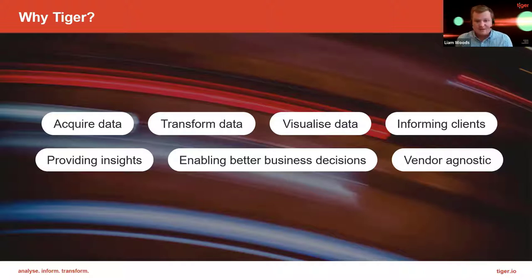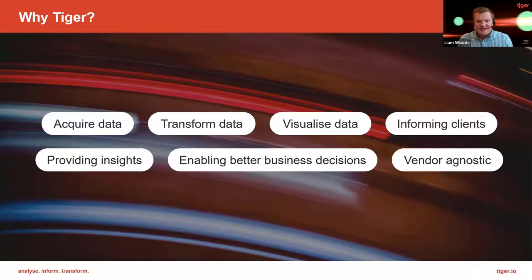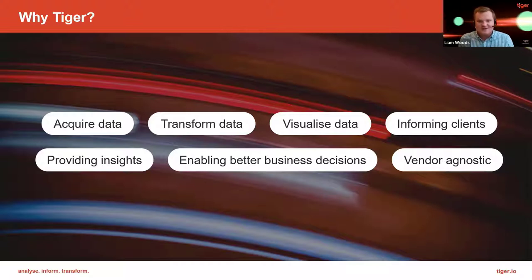During the demonstration I'm going to touch on how Tiger addresses those challenges. One key way we start to help is that we're vendor agnostic — we integrate with the most common UC&C platforms in use, from traditional telephony platforms such as Mitel, Cisco, and Avaya, right through to more up-to-date platforms such as Microsoft Teams. We take in that complex data from various formats and locations, and then contextualize it by integrating with an organization's Active Directory, giving organizations an intuitive analytics solution to help them make better decisions.